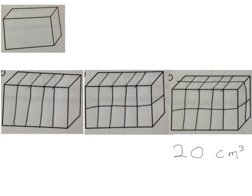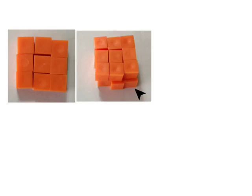The volume of this prism is 20 cubic centimeters. Now I've built a prism that has one 3-cube by 3-cube layer — its volume is 9 cubic centimeters. Let's add another layer on top of that. The volume of this prism would be 18 cubic centimeters because we have 2 groups of 9.